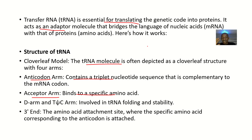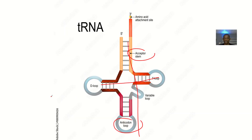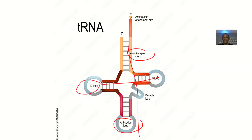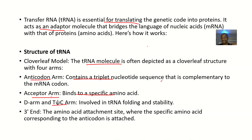Next we have the D arm, also called the D loop, and the T arm, also called the T loop. The D arm and the T arm are involved in tRNA folding and the stability of the tRNA molecule.